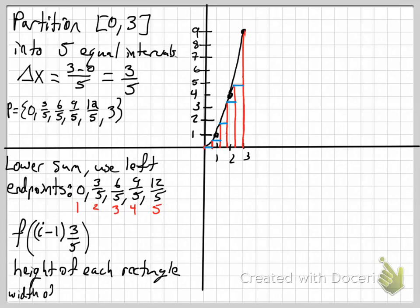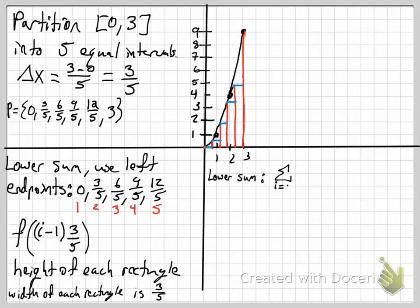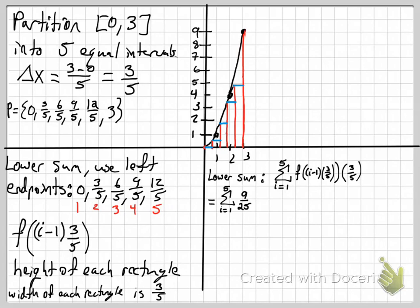The width of each rectangle is 3/5, and the area of a rectangle is just length times width. So to calculate the lower sum, I'm just adding up the area of those five rectangles. The function squares everything, so this 3/5, when squared, becomes 9/25. Then I need to FOIL i minus 1 squared, which gives i squared minus 2i plus 1, with that 3/5 attached.